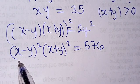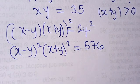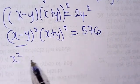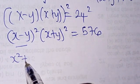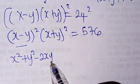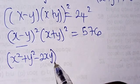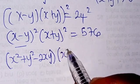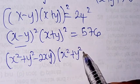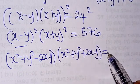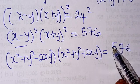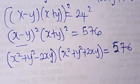Now we expand each factor separately as perfect square quadratics. The first gives x squared plus y squared minus 2xy, and the second gives x squared plus y squared plus 2xy. So we have the product of these two expanded forms equal to 576.